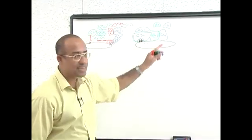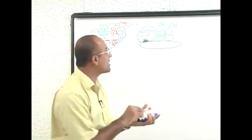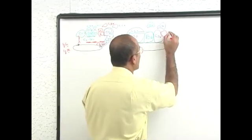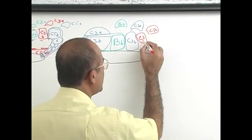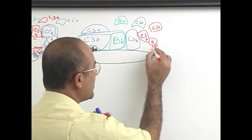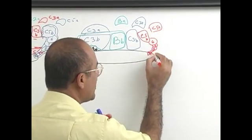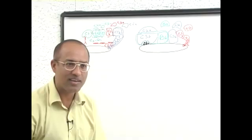Now all three together act as C5 convertase. They activate C5. What is lost? C5A. What is left behind? C5B. And what will bind with it? 6, 7, 8, and 9. And they will make perforations and kill the bacteria. Am I clear?